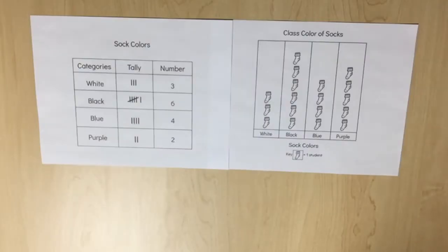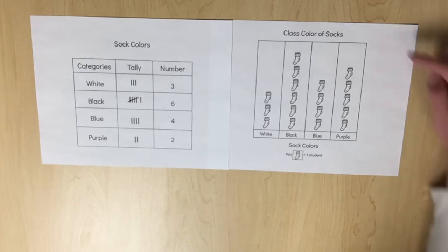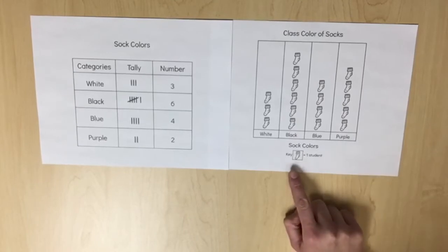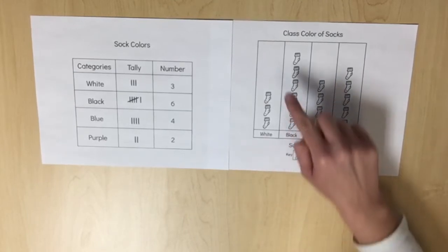In this lesson, students will create a pictograph to represent the data collected during the class survey in the previous lesson. Pictographs are a graphical representation that organizes data using a picture or symbol, where each picture or symbol may represent one or more than one unit of data to show the frequency or number of times each category occurs. Model how to create a pictograph using the survey data. The pictograph should include a title, the categories, and a key with a symbol.